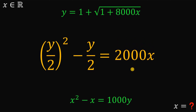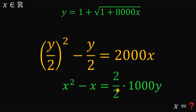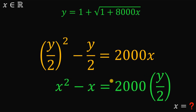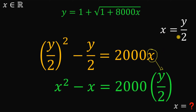Comparing the two equations, the only difference is 2,000x on one side and 1,000 on the other. Multiplying 1,000 by 2 over 2 gives 2,000 multiplied by y over 2. Now comparing: y over 2 squared minus y over 2 equals 2,000 times x, versus x squared minus x equals 1,000y, rewritten as 2,000 times y over 2. The relationship between x and y is therefore x equals y over 2.